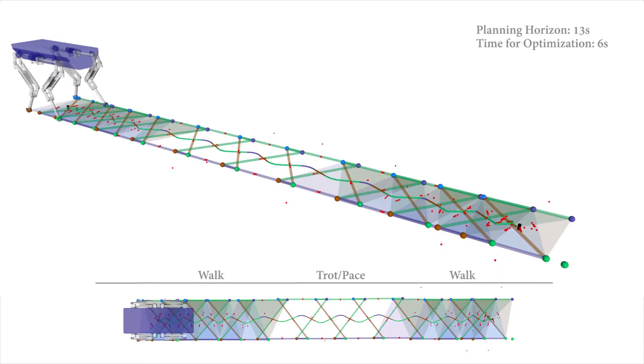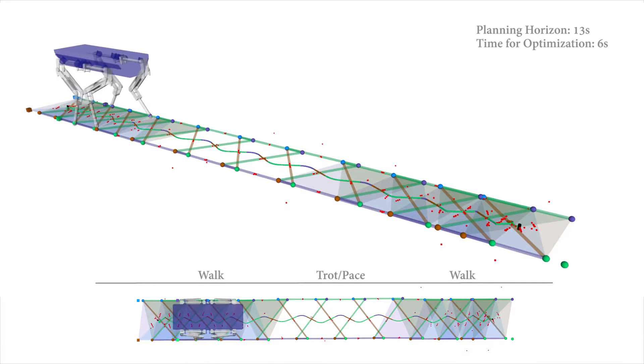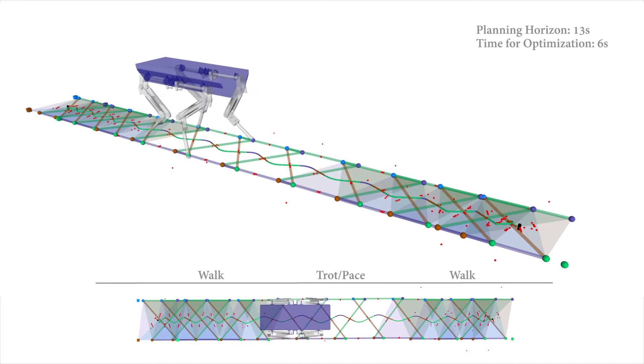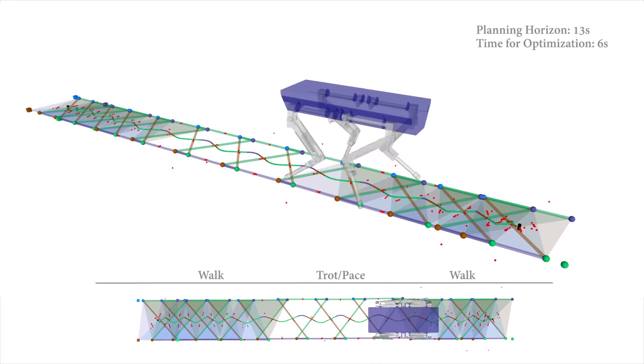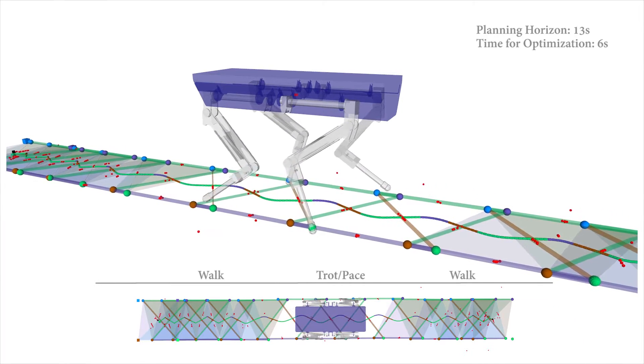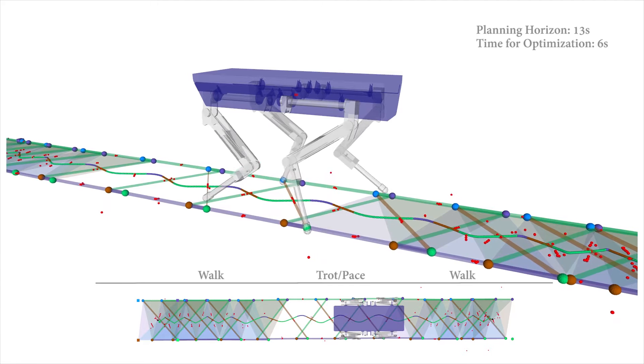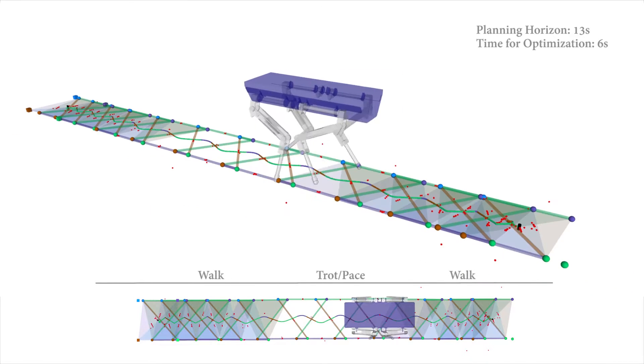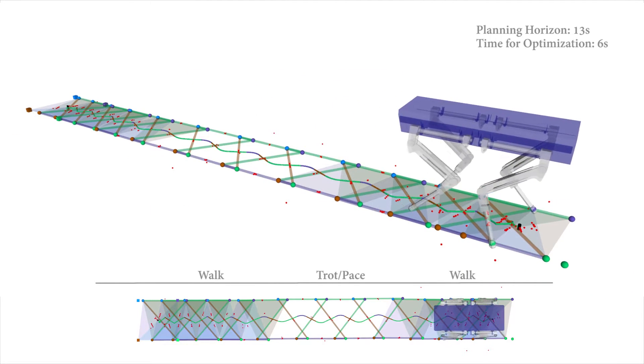This motion can be seen as a combination of the previous, with support triangles and support lines oriented both in walking motion and diagonally. These are created since the next leg in the sequence is lifted slightly before the previous leg touches down. Again, the center of pressure is optimized to always be inside the transparent areas.